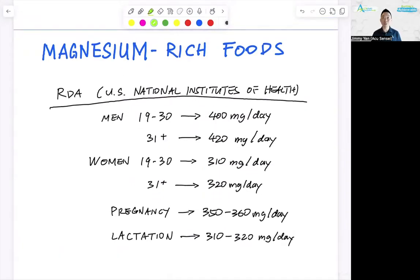To start off, how much magnesium do we actually need for the human body? The recommended dietary allowance from the United States National Institutes of Health says that for men 19 to 30, you need 400 milligrams per day of magnesium. If you're above 31, you need 422 milligrams per day. For women 19 to 30, you need 310 milligrams per day. If you're above 31, you need 320 milligrams per day. If you're pregnant, you need 350 to 360 milligrams per day. And if you're lactating, you need 310 to 320 milligrams per day.